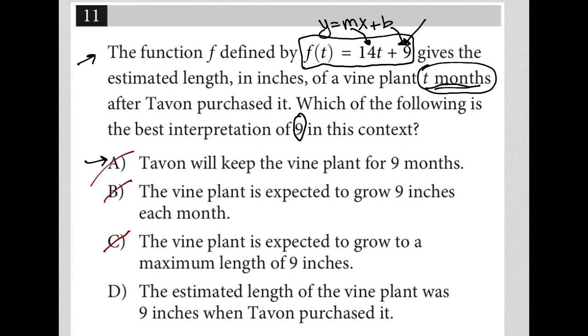And then choice D, the estimated length of the vine plant was 9 inches when Tavon purchased it. That makes the most sense. So when Tavon purchased it is equivalent to saying when t = 0. And when t = 0, we get f(0) = 14 times 0 plus 9, which is f(0) = 9 because this whole thing just becomes 0.